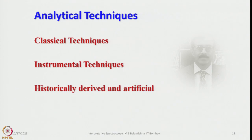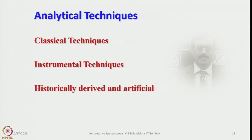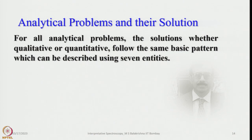Analytical techniques can be classified as classical techniques, instrumental techniques, and historically derived ones. For all analytical problems, the solutions — whether qualitative or quantitative — follow the same basic pattern described using seven entities. The first entity is the choice of method. After having an unknown sample and knowing its source, we have to choose the right method. For example, for organic molecules the first thing we should do is go for NMR and then mass spectrometry.